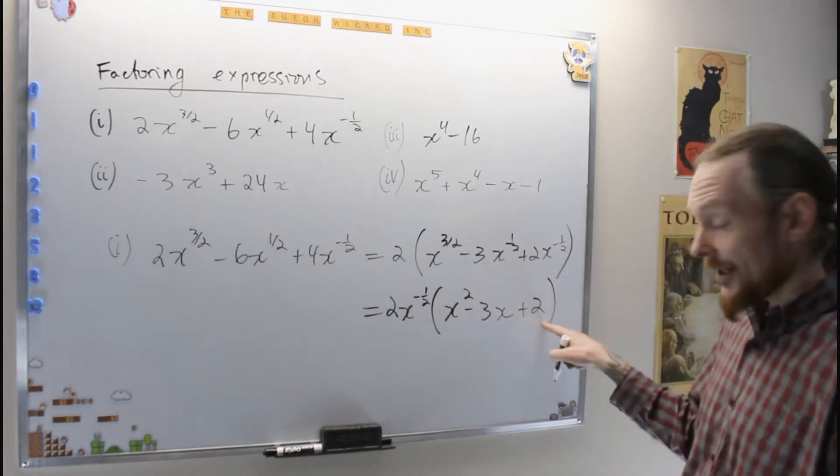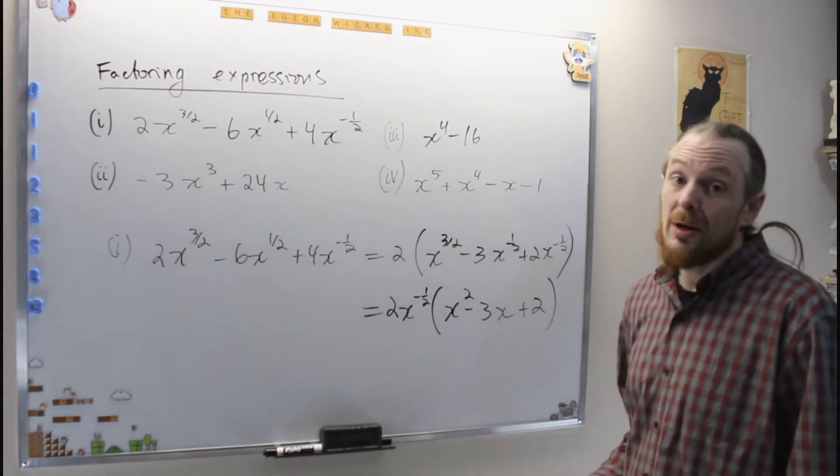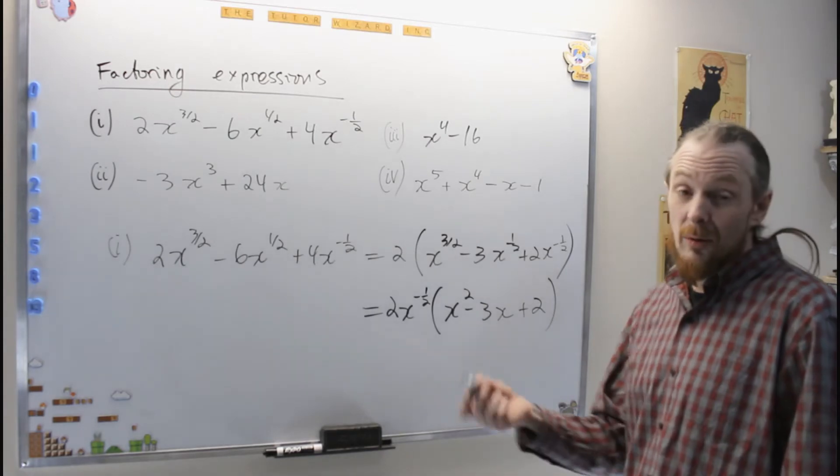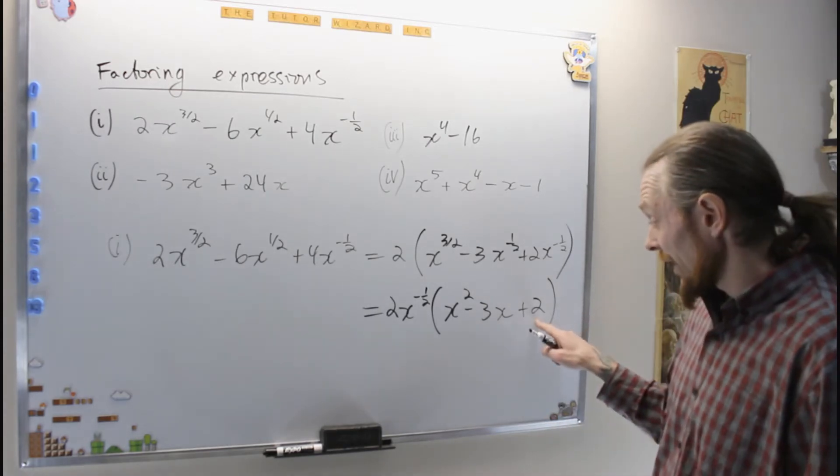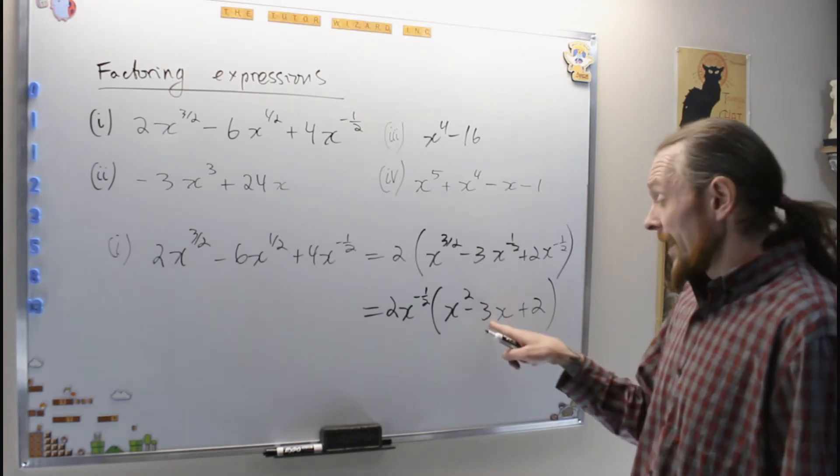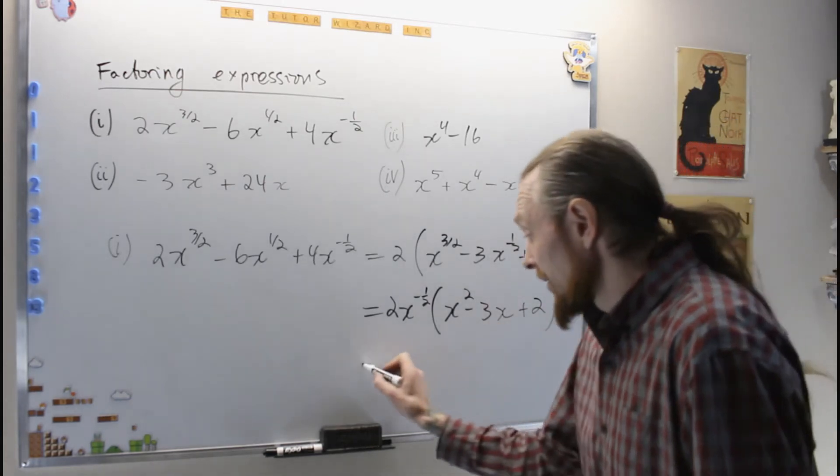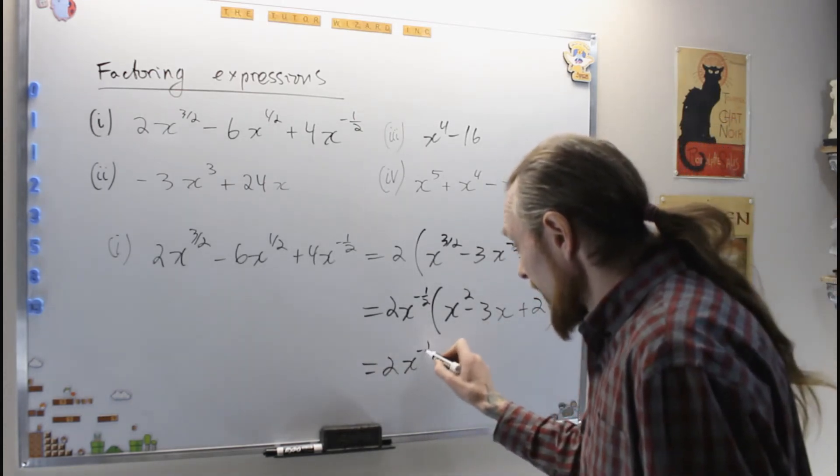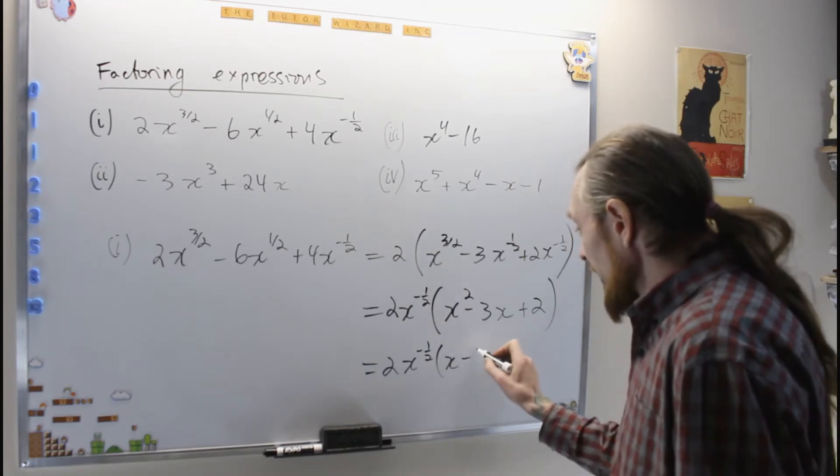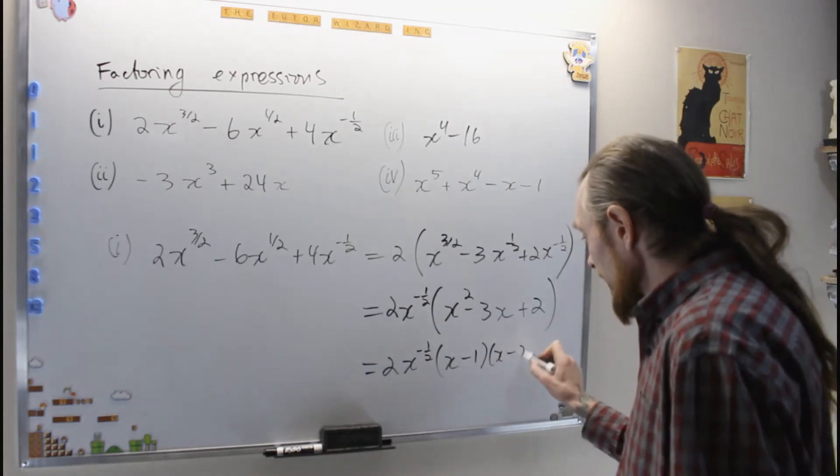Now we have a quadratic. We can borrow and steal or watch some of the other videos. We have the quadratic formula, or we're going to play the little game. What multiplies to give me positive 2 and adds to give me negative 3. That's 2 to the x to the minus 1 half, x minus 1, and x minus 2.